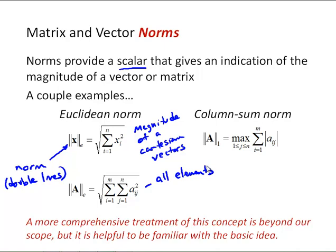Another example of a norm is a column sum norm. For this column sum norm, what we do is we go through all of the columns. For each column we sum the absolute value of all of the elements. And then take the maximum result. So whichever column has the maximum sum of its absolute values. And we'll talk about how we use these norms in a later video. But they can tell us something about how that matrix will behave. A more comprehensive treatment of this concept is beyond our scope. But we do want to be familiar with the basic idea of a norm as a way to give a single scalar value that indicates the magnitude of a matrix.